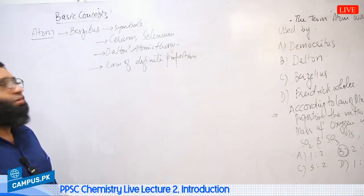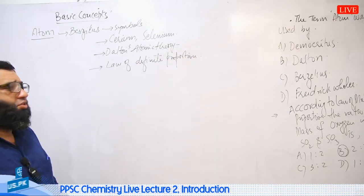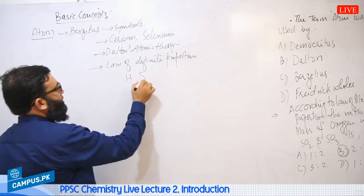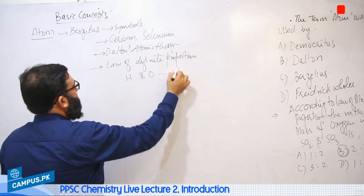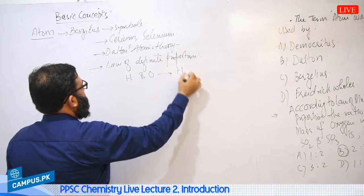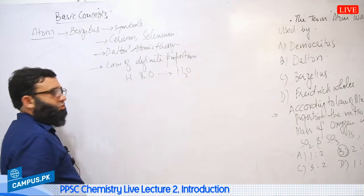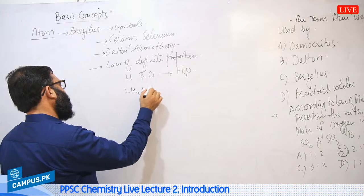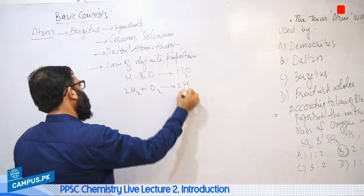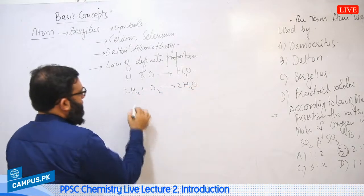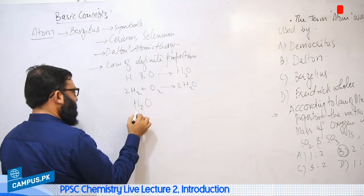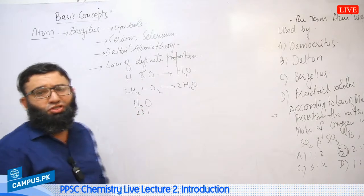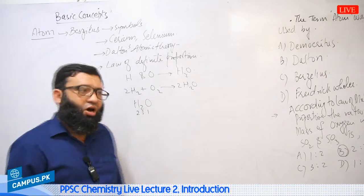The Law of Definite Proportion means that whenever Hydrogen and Oxygen undergo to form H2O, they always follow a fixed equation, and water will always have two atoms of Hydrogen and one atom of Oxygen.